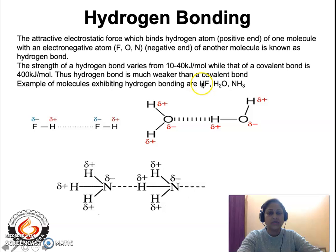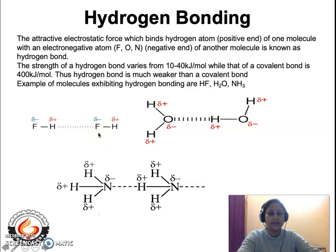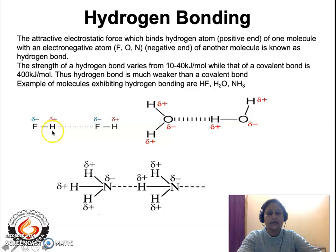Examples of molecules exhibiting hydrogen bonding include HF. The bond existing within an HF molecule is a covalent bond, but if one HF molecule is binding to another HF molecule, that type of bonding existing between the two molecules is called hydrogen bonding. It involves a hydrogen and an electronegative element. The hydrogen bonding is designated as dotted lines — the force of attraction between two molecules where hydrogen is the electropositive atom and fluorine is the electronegative atom. This is not a permanent bond.